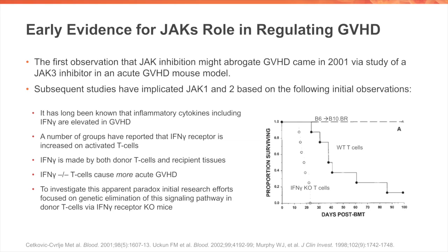The first observation of JAK inhibition abrogating graft versus host disease was in the setting of a JAK3 inhibitor used to prevent acute graft versus host disease in a mouse model. Subsequent studies implicated both JAK1 and JAK2. Inflammatory cytokines are essential for graft versus host disease, and interferon gamma is elevated in patients with graft versus host disease. The interferon gamma receptor is increased on activated T cells, and interferon gamma is made by both donor T cells and recipient tissues. However, elimination of interferon gamma from T cells actually results in more acute graft versus host disease in mouse models.